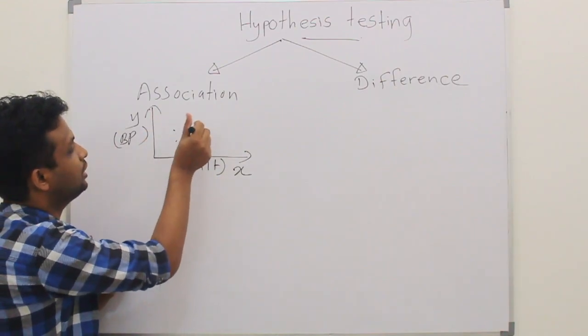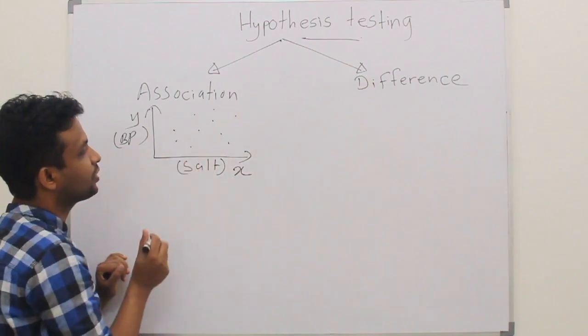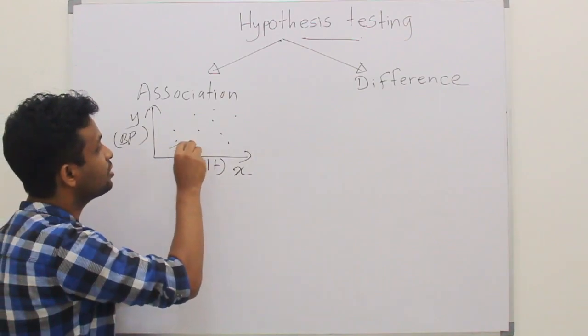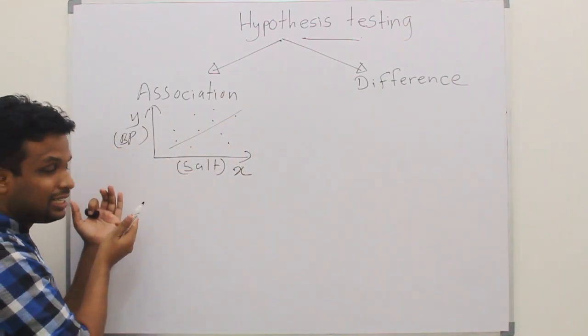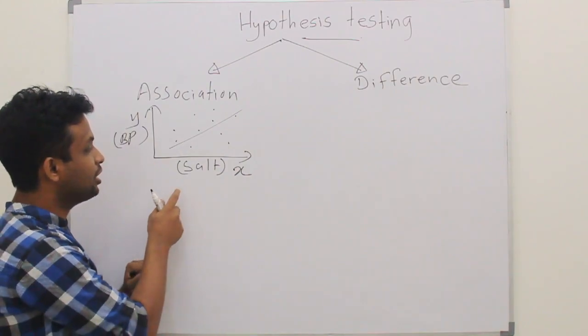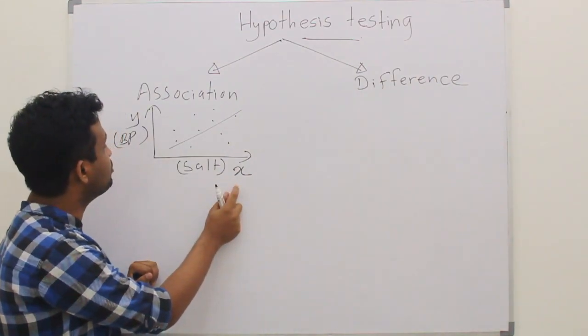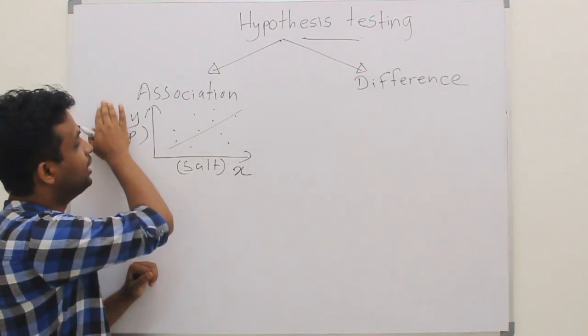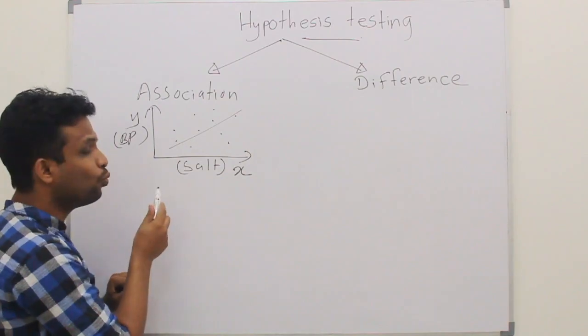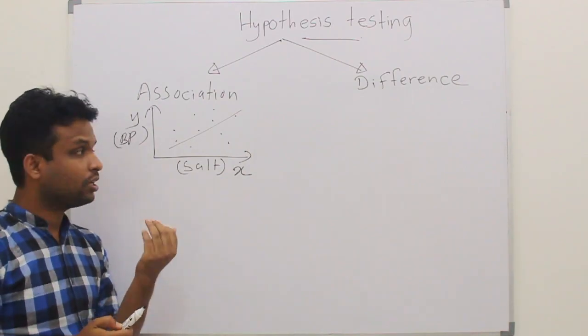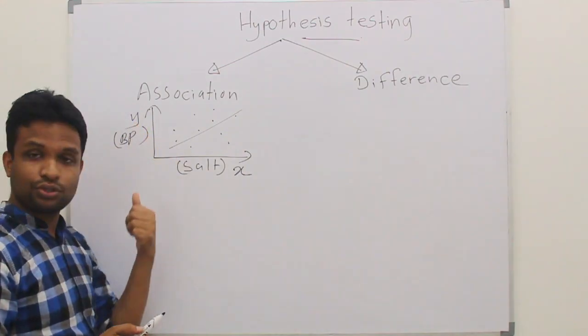You will get something like this. If you get some common line within this graph, you can say that this is associated. Because when you increase the salt consumption, according to this graph, we can identify that blood pressure is increasing.